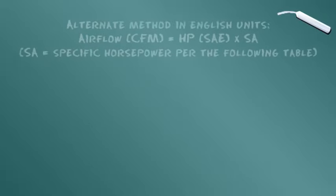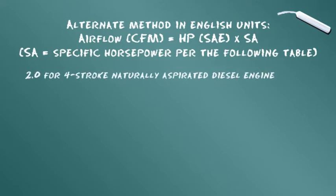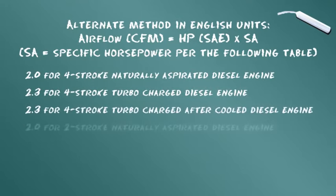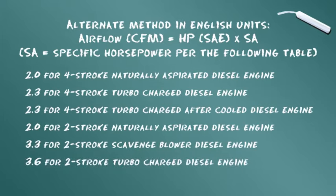Diese zweite Formel ist eine Alternative zur Berechnung des Luftflusses anhand der Motorleistung. In dieser Formel repräsentiert SA den spezifischen Luftfluss pro PS. Den Faktor entnehmen Sie der Tabelle. Diese Tabelle wird zusammen mit der englischen Formel verwendet.